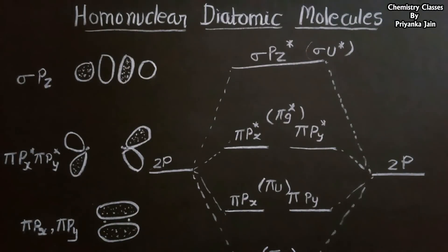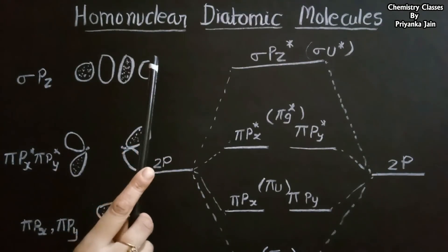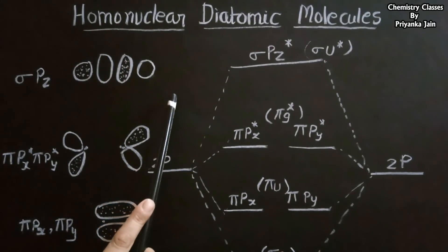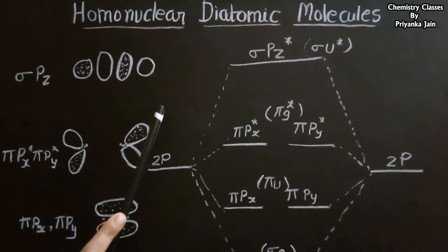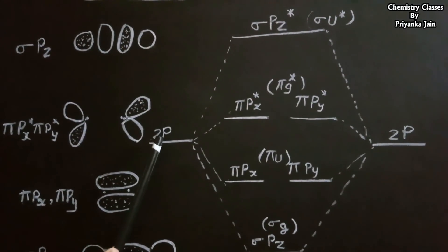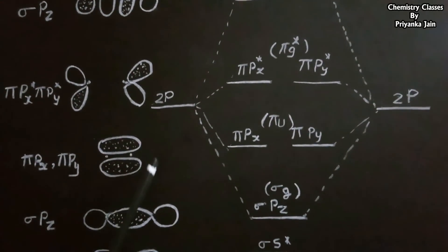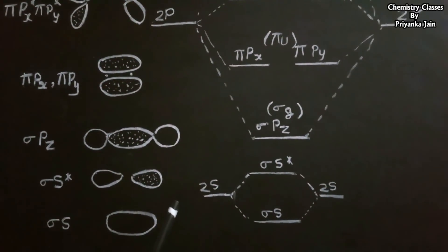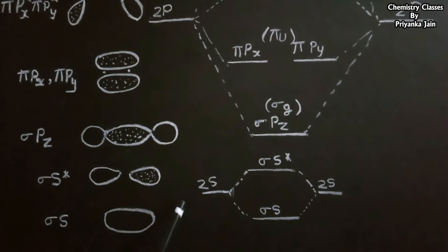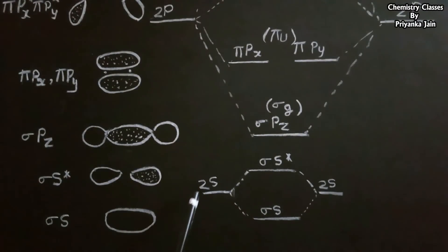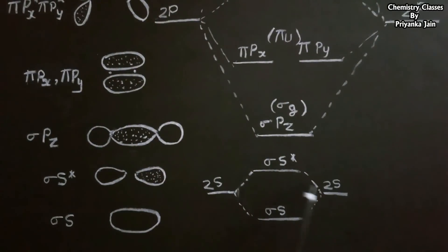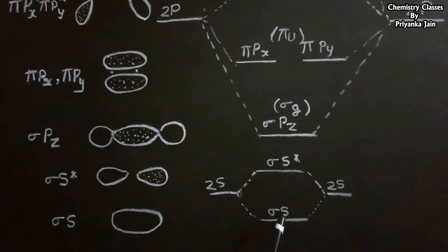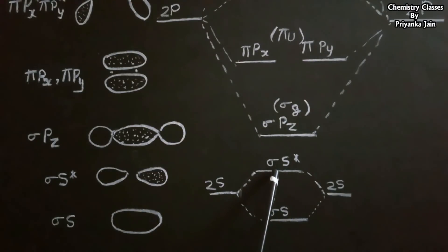Before going to the molecular orbital diagrams for coordination complexes, we should look at the MO diagram for homonuclear diatomic molecules to understand basic molecular orbitals and symmetry properties. This is the MO diagram for a basic diatomic molecule, starting with 2s orbitals. When two 2s atomic orbitals combine, they form two molecular orbitals: a bonding σs molecular orbital and an anti-bonding σs* molecular orbital.